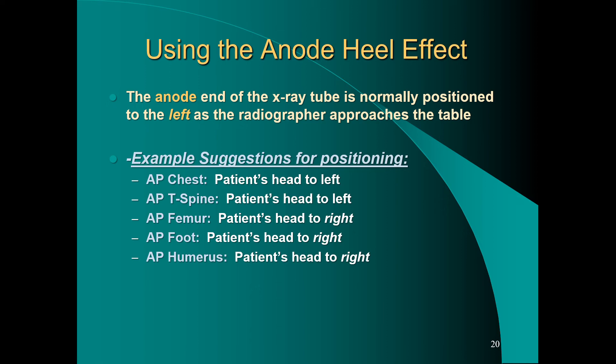The anode is typically on the left side of the table as the radiographer stands facing the x-ray tube. Suggested positioning examples: AP chest (supine) — patient's head to the left; AP T-spine — patient's head to the left, placing the cathode toward the bottom of the T-spine; AP femur — patient's head to the right, placing the thicker end toward the cathode; AP foot — heel of foot toward the cathode, patient's head to the right; AP humerus — patient's head to the right.